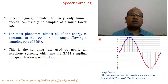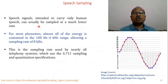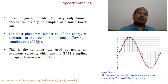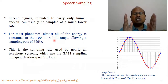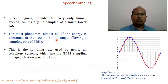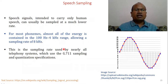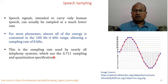When we sample speech, a speech signal carrying human speech can usually be sampled at a much lower rate because the frequency of speech is not very high. Almost all the energy of phonemes is contained in 100 Hz to 4 kHz, which allows a sampling rate of 8 kHz as the Nyquist rate. This 8 kHz sampling rate is used by nearly all telephonic systems that use the standard G.711 sampling and quantization specification.